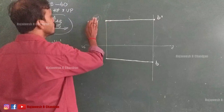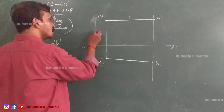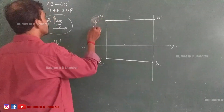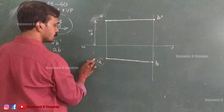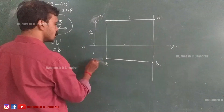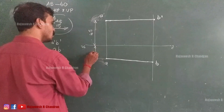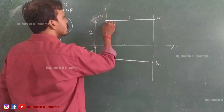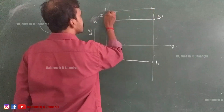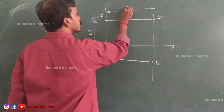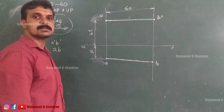Now we have to dimension it. We know that the distance above HP is 45 mm, the distance in front of VP is 15 mm, and the length of both projections is 60 mm. The problem is solved.